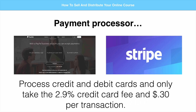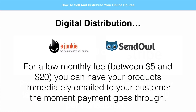The third and final element you need — which is very, very important — is digital distribution. You need a way for when people buy your online course for them to actually get access to it automatically. Two great places to start are eJunkie and SendOwl. Both of these services have a low monthly fee, usually between $5 and $20 depending on what features you need. They allow you to have your course immediately emailed to your customer the moment payment goes through. It integrates with PayPal or Stripe so that a buy now button is connected and knows what to do.